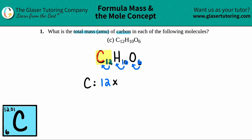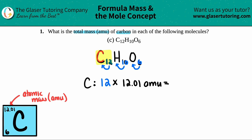Which number am I going to multiply by 12? The mass is always the larger number — we'll call it the atomic mass. In this case, it's in AMU. AMU stands for atomic mass unit — it's the simplest way of measuring an atom's mass. So I'm going to say 12 times 12.01 AMU, and whatever that is, that's the answer.